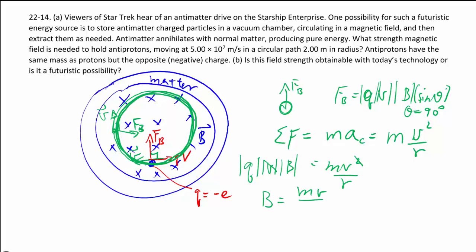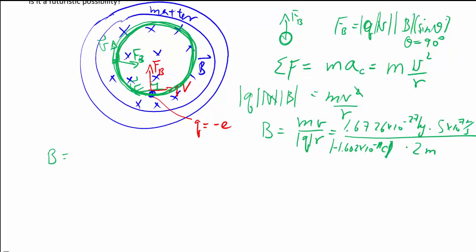Subbing everything in, we looked up the masses already. And this is the absolute value sign for the antiproton. It has a negative charge, but all we care about is the magnitude anyhow. And then it has a radius of 2 meters. Calculator work gives us 0.261 Tesla.